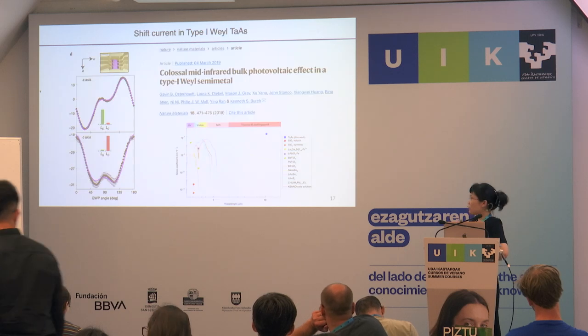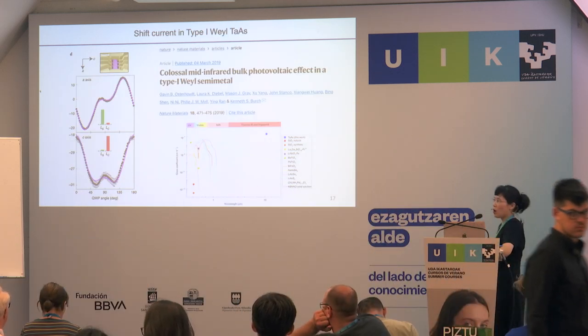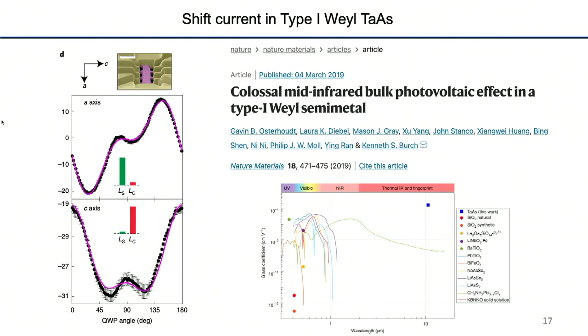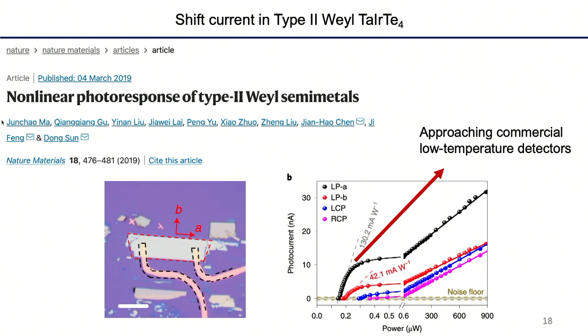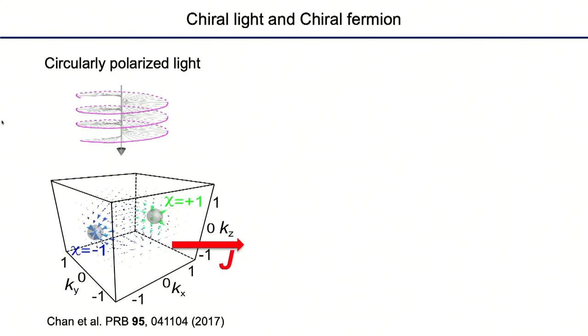Moving to shift current in tantalum arsenide, this was measured by colleagues at Boston College and Cambridge. The response can be quite large, and in tantalum iridium telluride the response at low power can approach commercial detectors, making it useful. Since the shift current has already been discussed, I will focus on something involving circular polarized light.